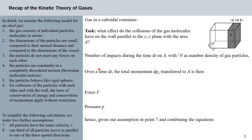Let's start out by defining our simple model of an ideal gas. You've seen that before so we'll go quickly through it. The gas consists of individual particles, molecules or atoms. The dimensions of the particles are minuscule compared to the distance between each other and compared to the dimensions of a vessel. The particles do not exert any forces on each other except for collisions. The particles are constantly in a completely disordered state — Brownian motion. Number five: the particles behave like rigid spheres. Number six: for collisions of the particles with each other and with a wall we apply conservation of energy and conservation of momentum.